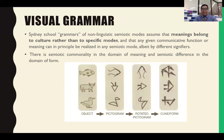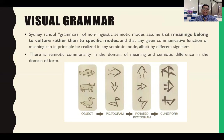In terms of visual grammar, Sydney School grammars of non-linguistic semiotic modes assume that meanings belong to culture rather than to specific modes. Visual grammar perspective tells us that meanings are actually from culture, and not really from the specific modes we use when we channel the discourse. It also suggests that any given communicative function or meaning can in principle be realized in any semiotic mode, albeit by different signifiers. So there could also be other signifiers that need to be considered in terms of discourse analysis.